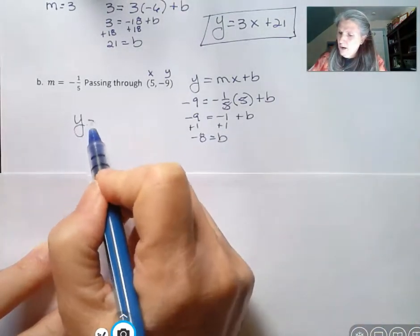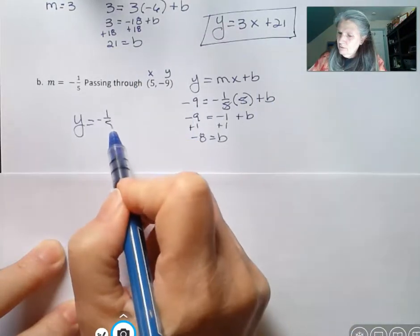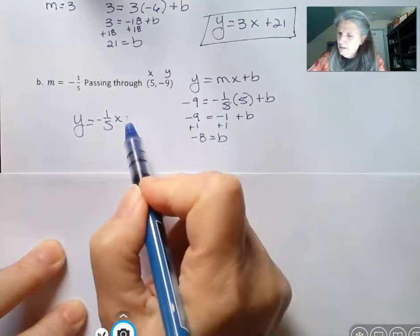So y equals m, which is negative 1 fifth, x minus 8.